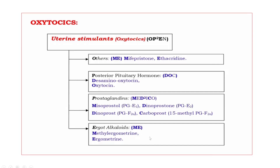Let us discuss one by one. Others — M, E: M means Mefepristone, E means Ethacridine. Next, Posterior Pituitary Hormone. The drugs are D, O — bold letters D and O: D means Deaminooxytocin, O means Oxytocin.